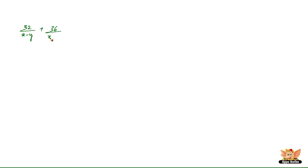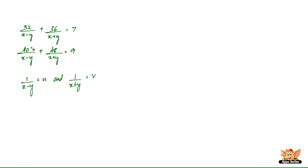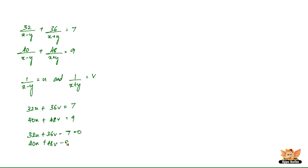Recalling the two equations: 32 divided by (x minus y) plus 36 divided by (x plus y) equals 7, and 40 divided by (x minus y) plus 48 divided by (x plus y) equals 9. We need to reduce this to the form of simultaneous linear equations. Let u equal 1 divided by (x minus y) and v equal 1 divided by (x plus y). So we get 32u plus 36v equals 7, and 40u plus 48v equals 9.